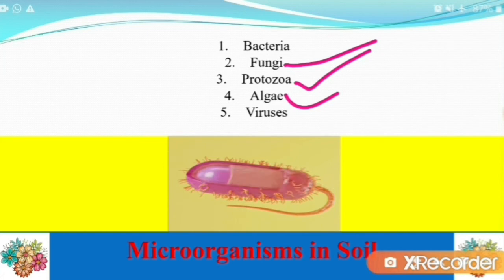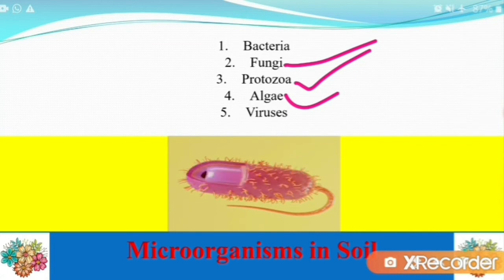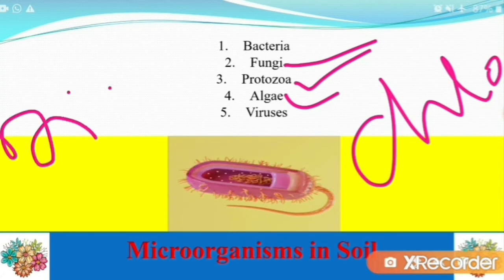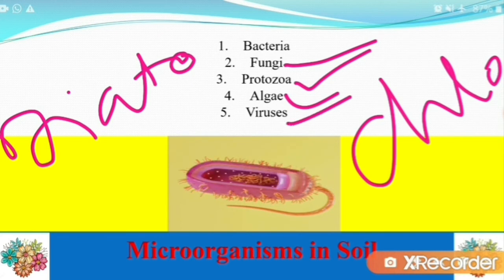Next is algae. Algae are generally found on the surface of moist soils where there is sufficient light for their photosynthetic reactions. Examples include Chlorophycea and diatoms.